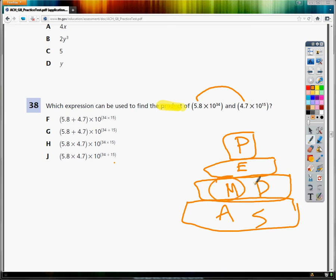Anything that doesn't show multiply between 5.8 and 4.7 is wrong. So these two are both out.